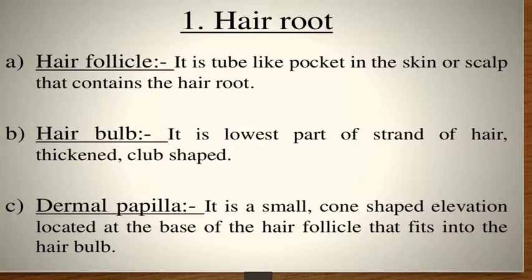The hair root consists of hair follicles — a tube-like pocket in the skin or scalp that contains the hair root. The hair bulb is the lowest part of the strand of hair; it is thick and club-shaped. The dermal papillae is a small cone-shaped elevated structure located at the base of the hair follicle that fits into the hair bulb.